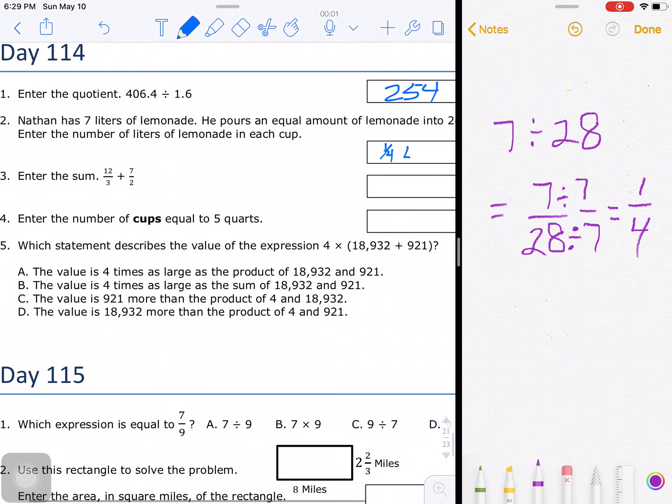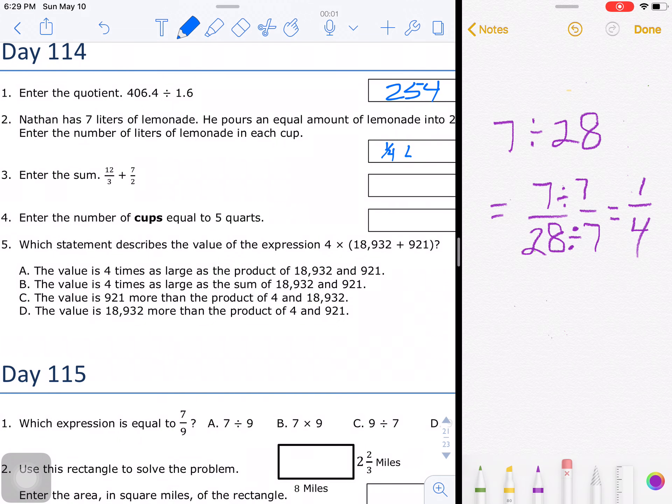For number 3, it says enter the sum: 12/3 plus 7 and 1/2. Now we know that when we add fractions we have to have common denominators, but remember how I've mentioned before we can look for different strategies. I know, and I'm sure you guys recognize this as well, that 12/3 is the same as 4. And I know that 7/2 is the same as 3 and 1/2.